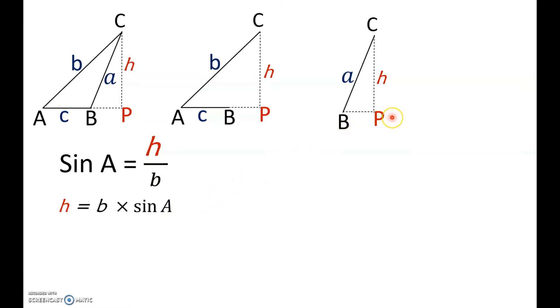Similarly, let's find what is sine B for the second triangle. So, sine B would be equal to H over A. Now, further simplifying this, you get H is equal to A times sine B.